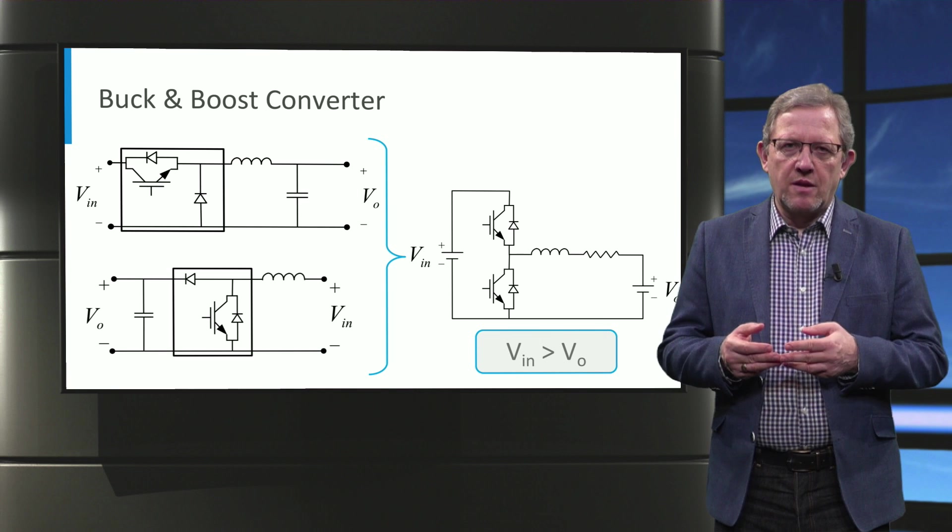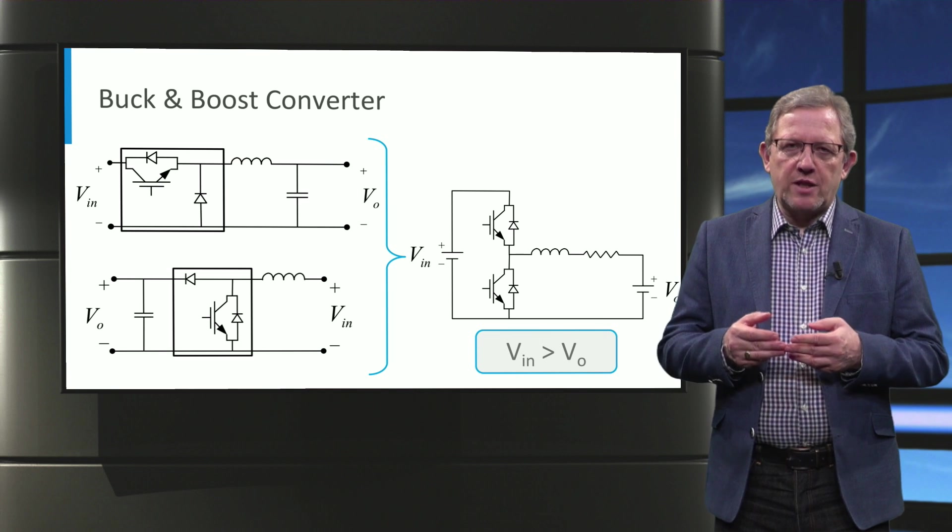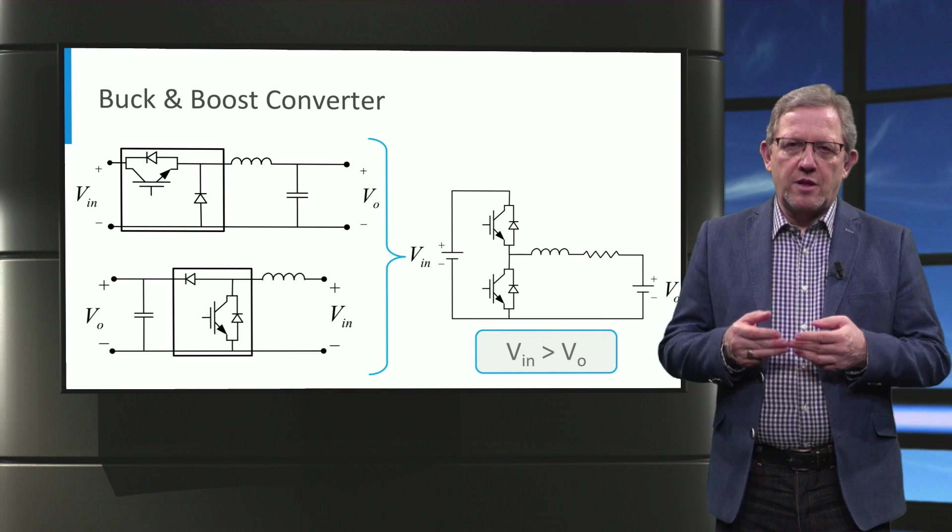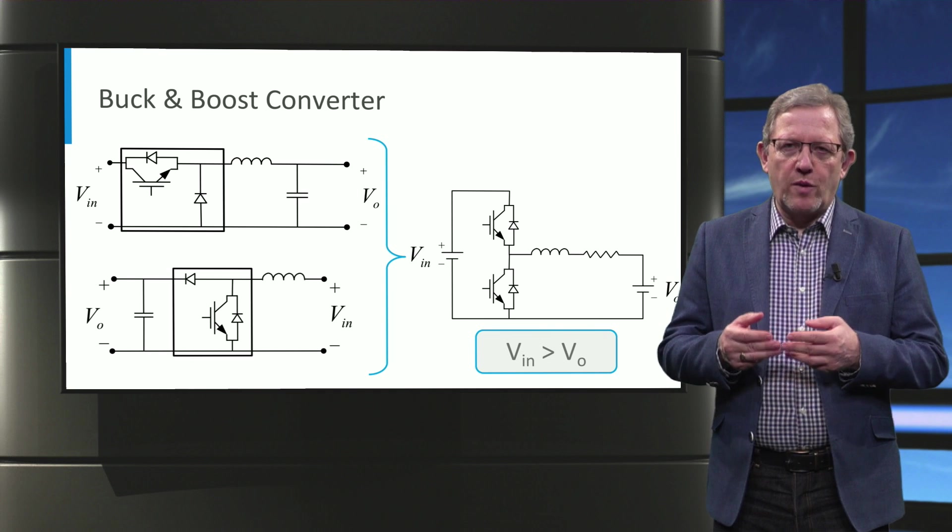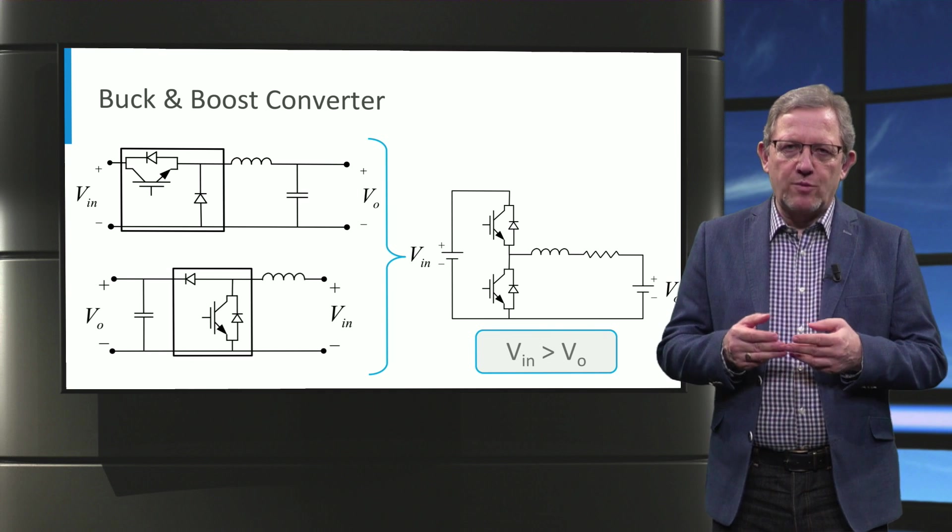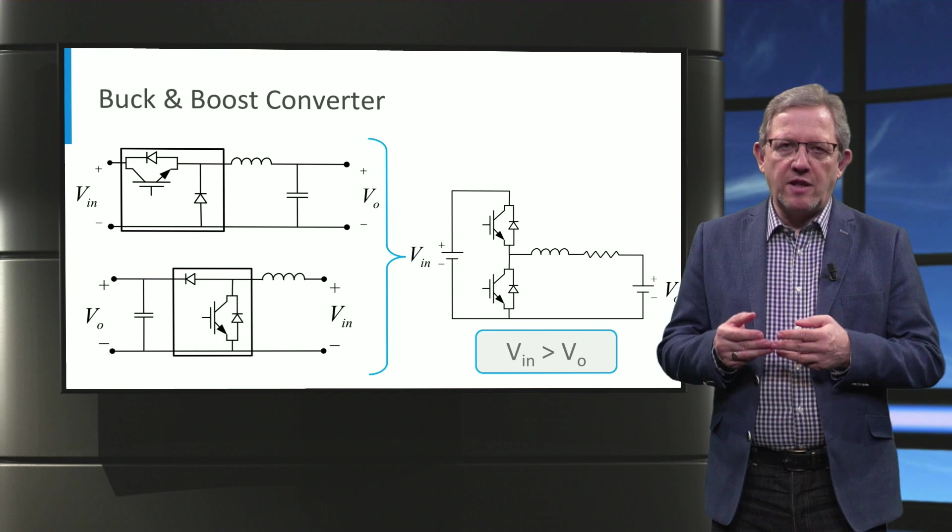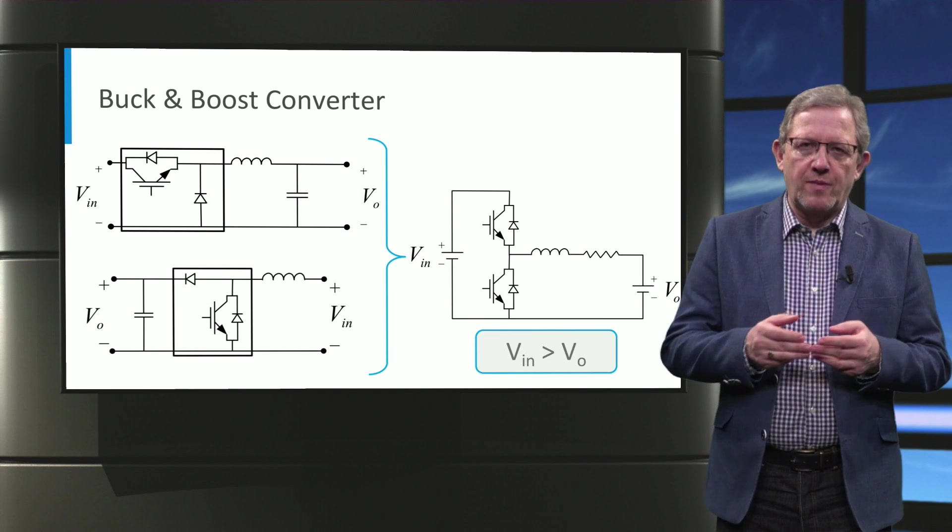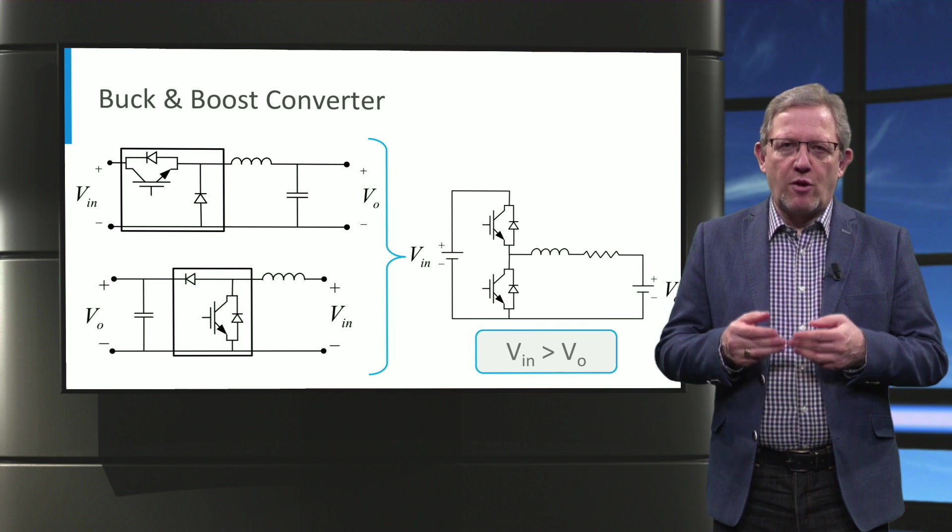This consists of two switches, which are equipped with the two antiparallel diodes. This combination is not so straightforward as this converter is a buck from the left to the right side and a boost from the right to the left. Let us have a look at the more details.